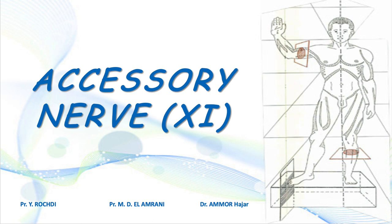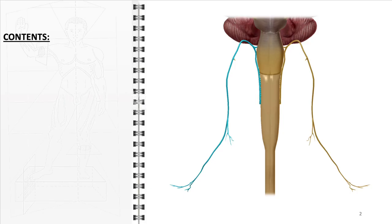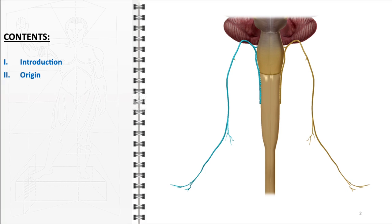In this video, we will explore the intricate anatomy of the accessory nerve, delving into its unique characteristics and vital functions. We'll begin with a brief overview, focusing on the origins of the accessory nerve. In this discussion, we will highlight its dual components, the cranial and spinal parts, elaborating on their distinct roles.